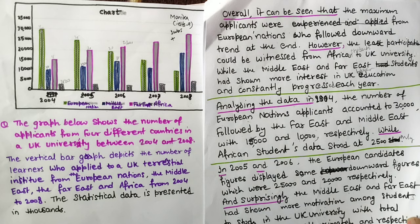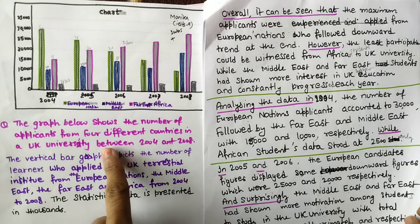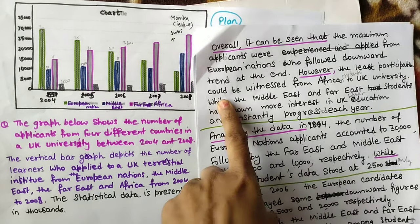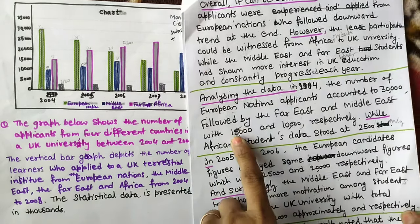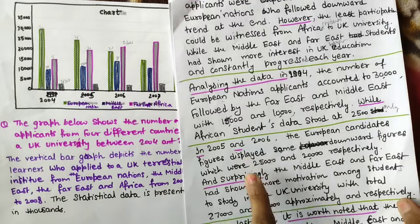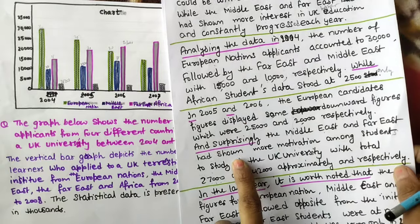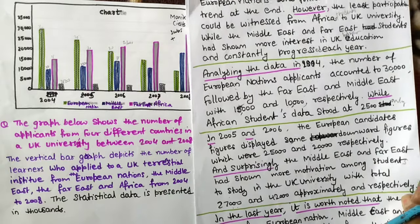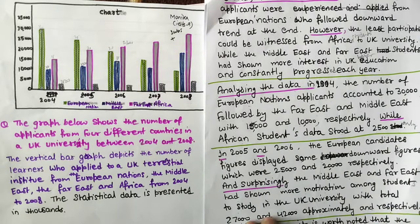So you can see the full lesson structure: introduction, overall paragraph, first body paragraph, second body paragraph, and third body paragraph. This is how you write the complete IELTS Writing Task 1 bar graph response. Thank you.